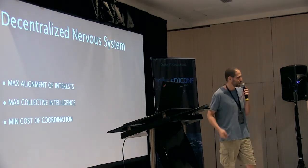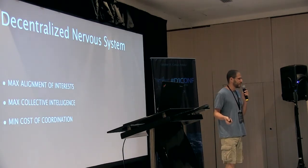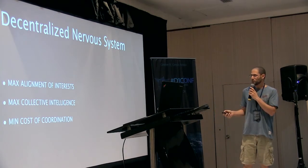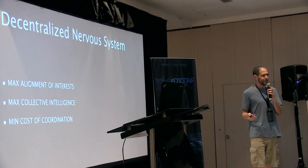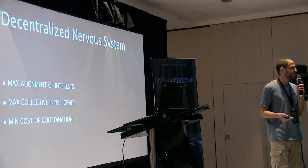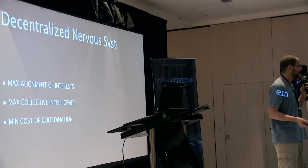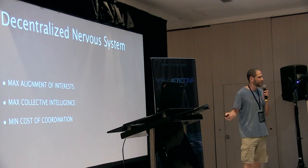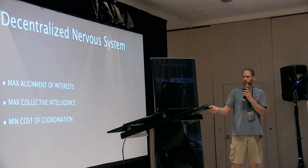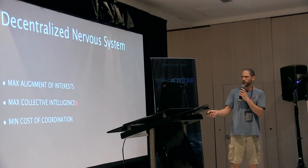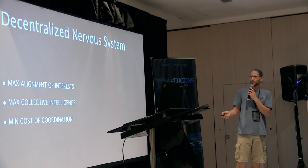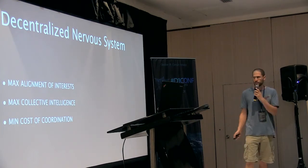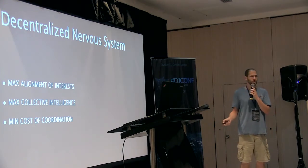We want to make a generalized decentralized decision-making system. What are the qualities we would like to achieve? I would argue there are three basic fundamental qualities: maximum alignment of interest, maximum collective intelligence, and minimal cost of coordination.